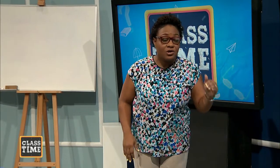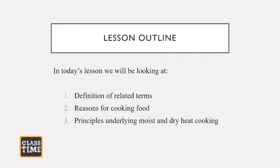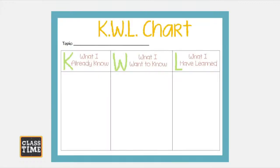This is a graphical or tabulated representation of what you have learned in today's session or any session. You'll go back to your content — the subheadings being: define related terms, reasons for cooking food, and principles underlying moist and dry heat. From these topics, you look at what you already know, what you want to know, and at the end of the lesson, self-evaluate what you have learned. For example, if you already know the definition of cooking, fill it in the first slot. If you don't know the principle, write that you want to know it, then fill in what you learned at the end.